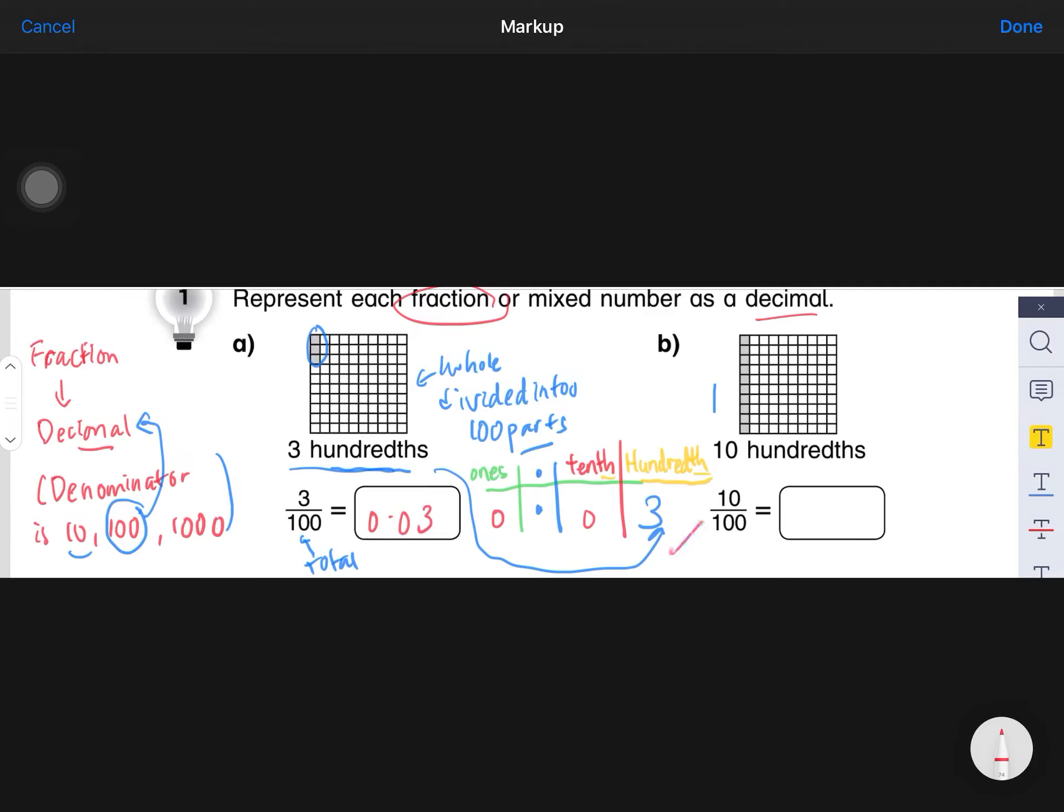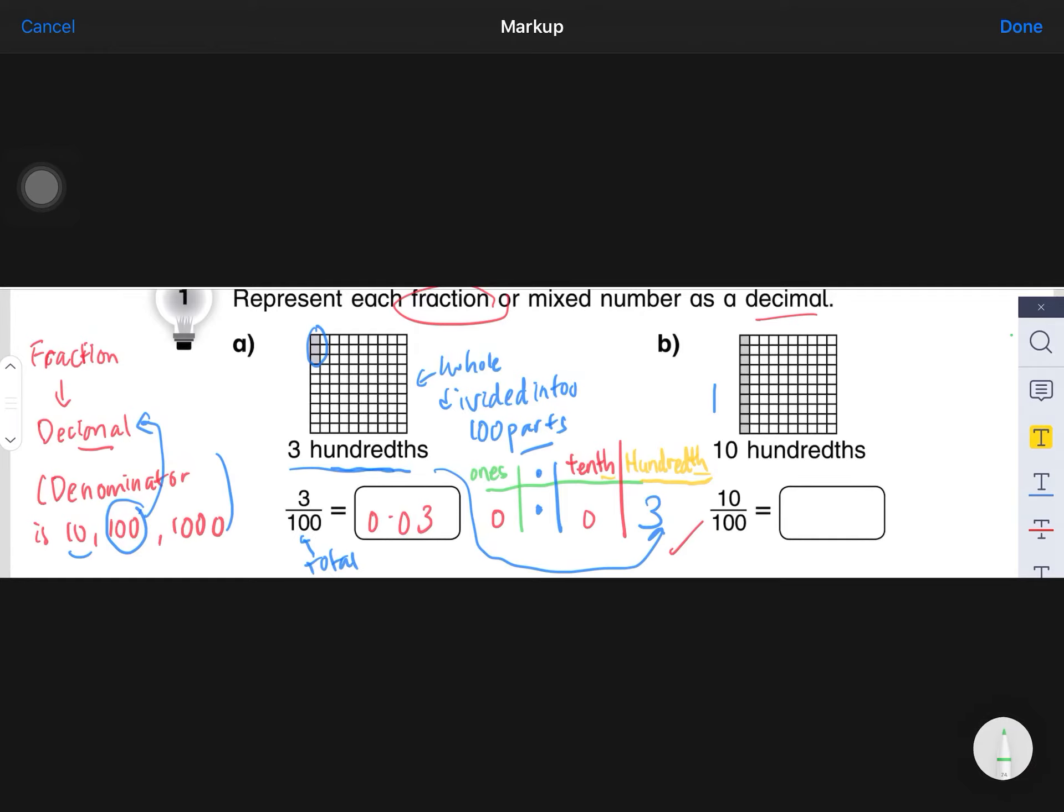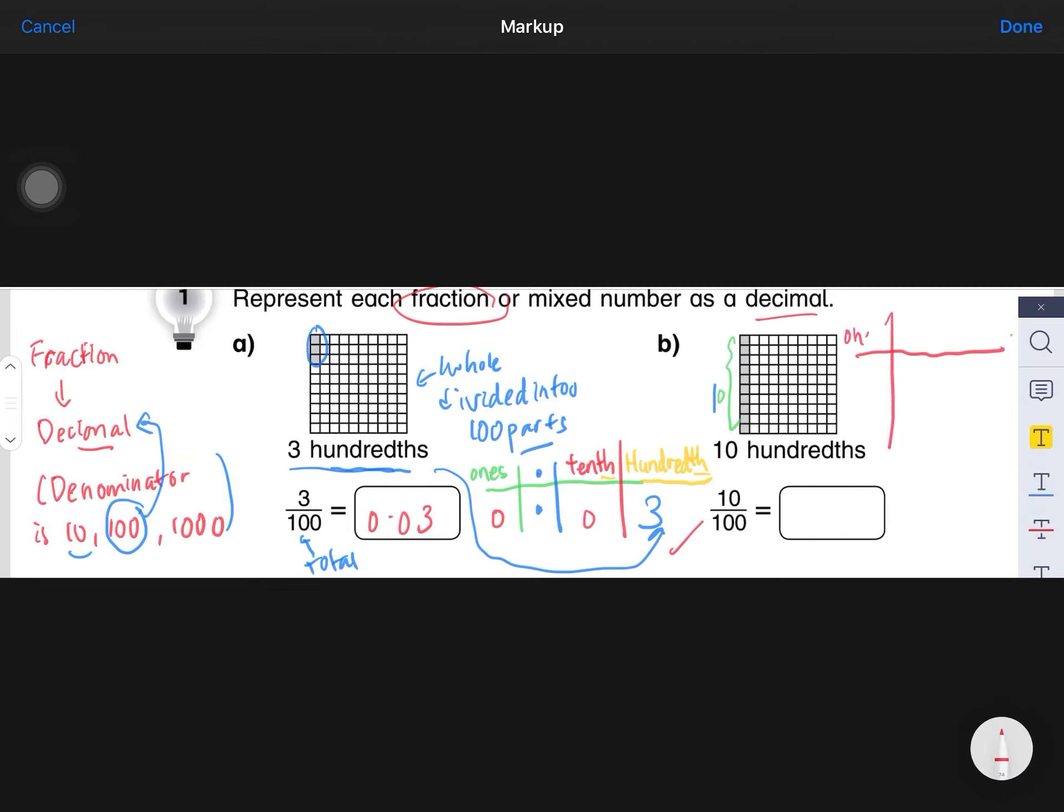Okay, 10 hundredths. So that means this is divided into 100 parts, 100 equal parts, and 10 of them are shaded. So 10 parts are shaded out of 100 equal parts. Same thing, we are going to draw the place value table. Ones.